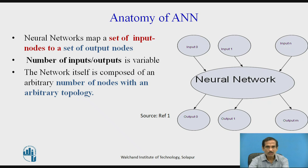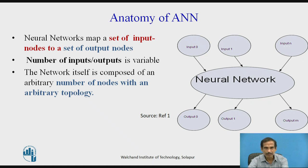When we look at the anatomy of an artificial neural network, we see that the neural network maps a set of input nodes to a set of output nodes. There are inputs 0 to n and outputs 0 to m, so there are n inputs and m outputs. The network itself is composed of an arbitrary number of nodes with an arbitrary topology.